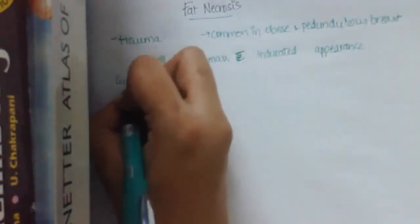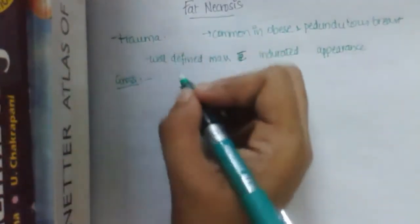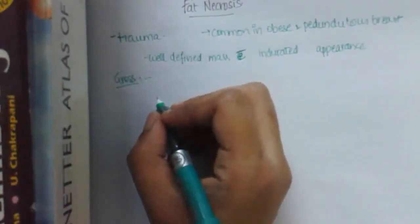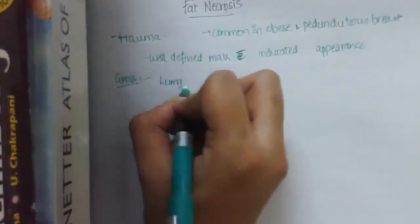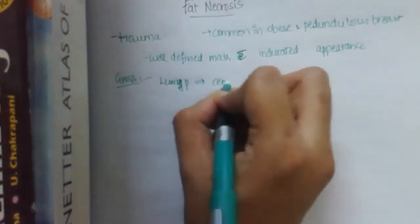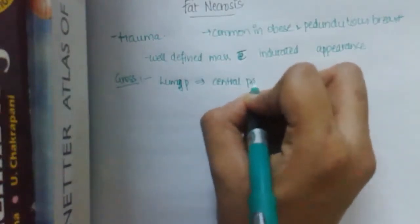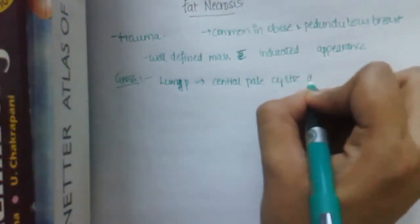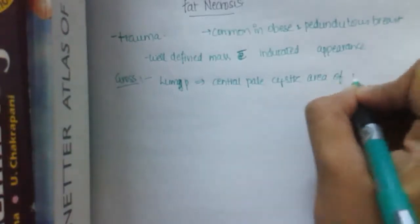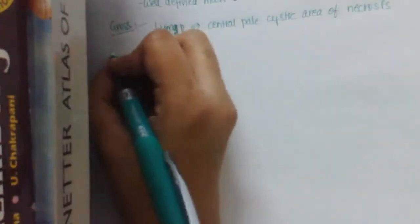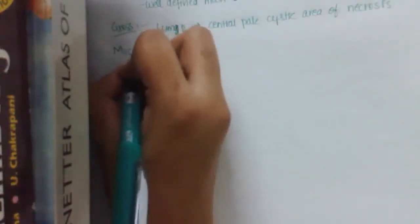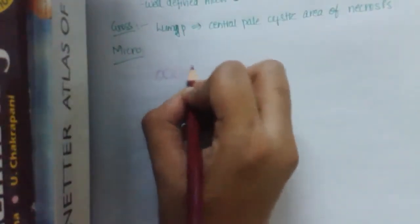And gross features, gross features are the excised lump is, there is a lump which is central pale cystic area of necrosis is seen. So what are the microscopic features? There is adipose tissue in the breast. Now we are just concentrating on the adipose tissue in the breast.